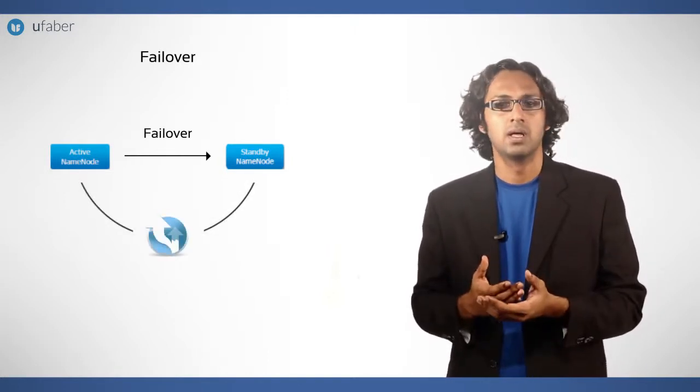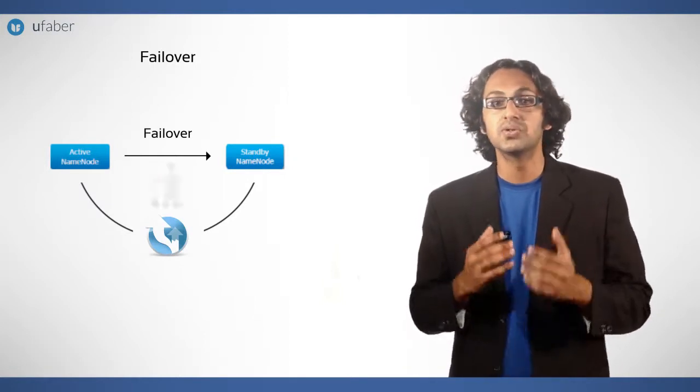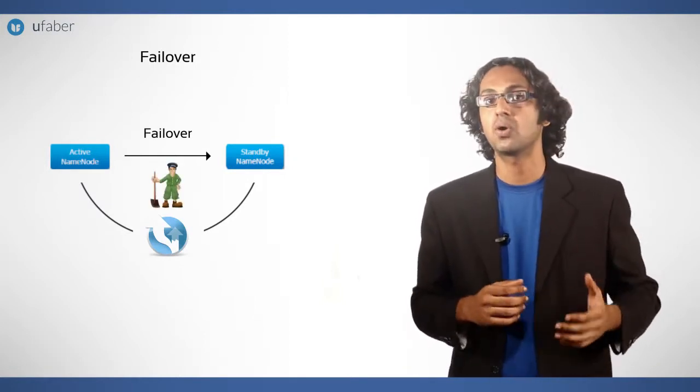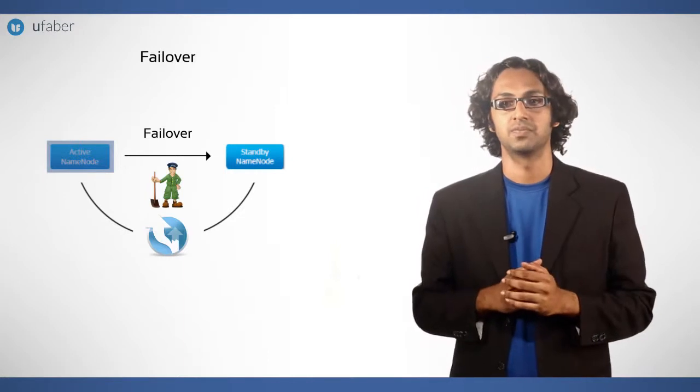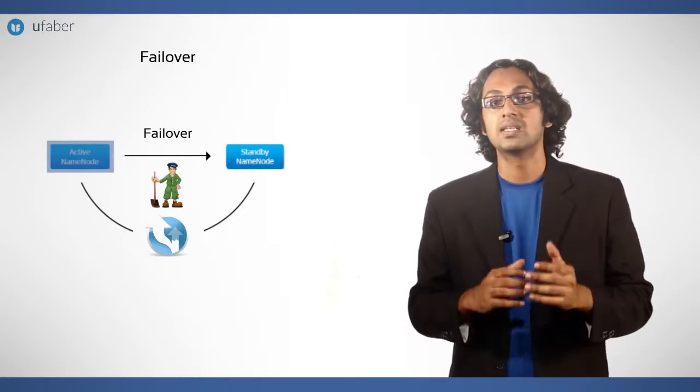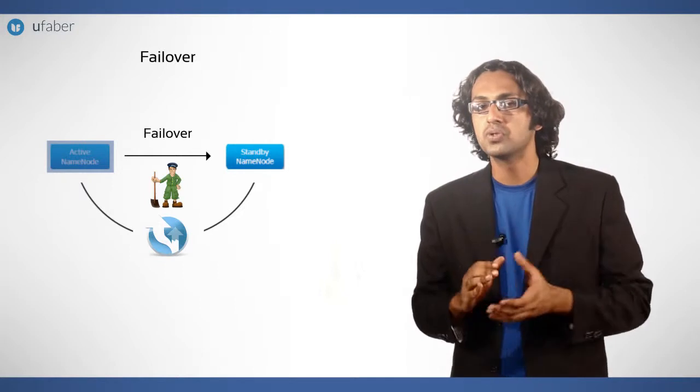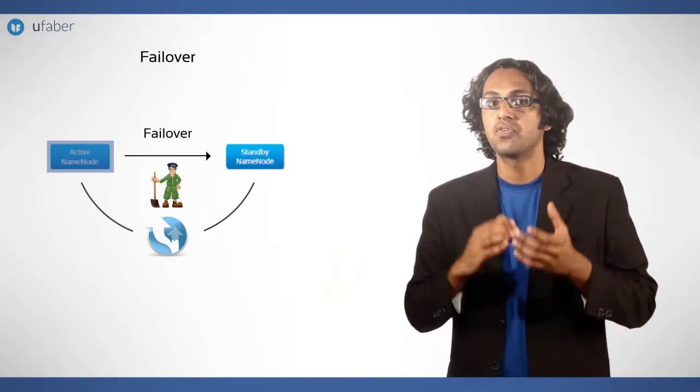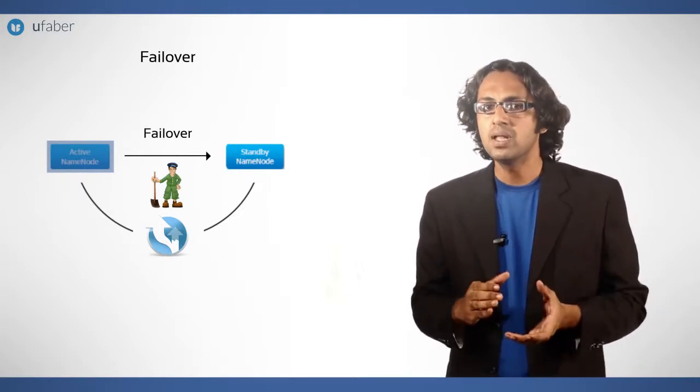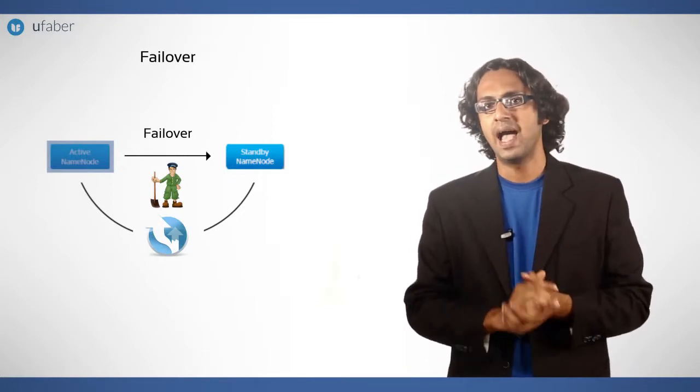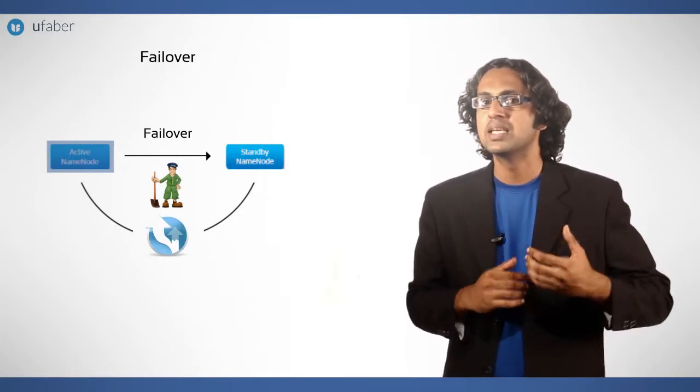Failover controllers are pluggable, but the first implementation uses ZooKeeper to ensure that only one name node is active. Each name node runs a lightweight failover controller whose job is to monitor its name node for failures using a simple heartbeat mechanism and to trigger a failover should a name node fail.